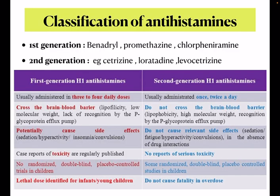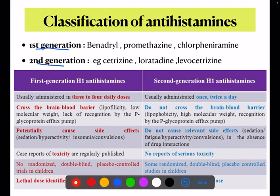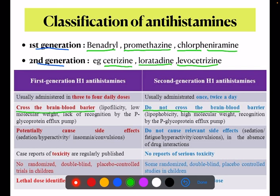Next, classification of antihistamines. Antihistamines are usually divided into two generations. First generation drugs include Benadryl, promethazine, and chlorpheniramine. Second generation drugs include cetirizine, loratadine, and levocetirizine. The first generation antihistamines can cross the blood-brain barrier, but the second generation antihistamines cannot cross the blood-brain barrier.